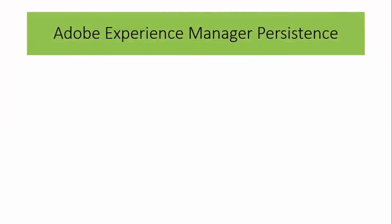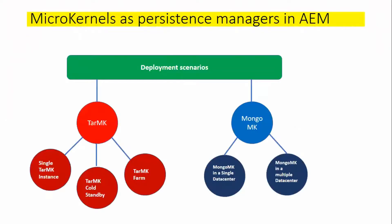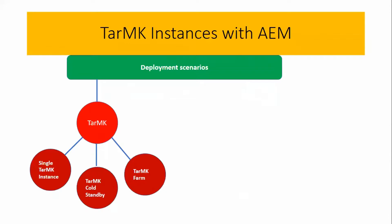In my previous video I talked about Adobe Experience Manager persistence mechanisms. As shown in this diagram, we have various options available: TarMK instances and MongoMK. In TarMK we have single TarMK instance, TarMK cold standby, and TarMK farm. With MongoMK we have MongoMK in a single data center and MongoMK in a multiple data center. In this video I am going to talk more about the TarMK instances.